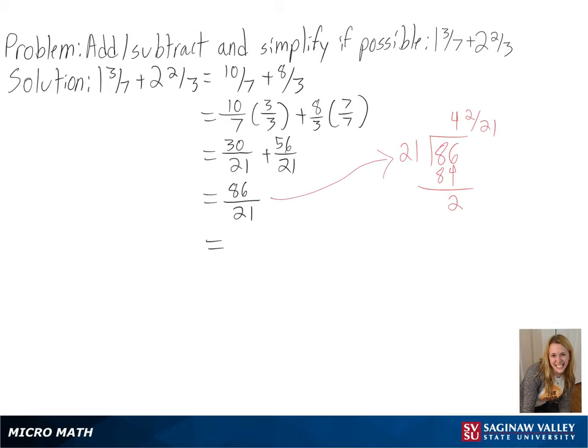We can use long division to convert back into a mixed number and get 4 and 2 over 21 as our final answer.